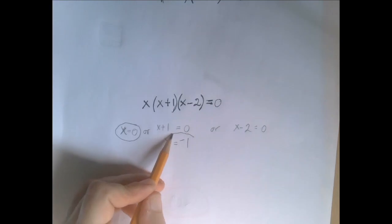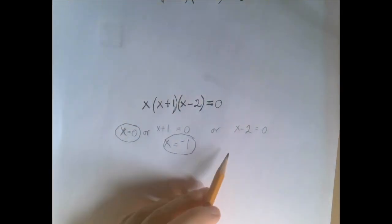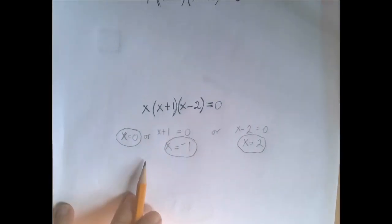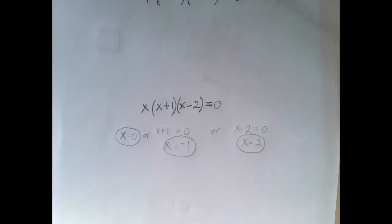then the second factor is zero. And solving the third linear equation, if x is 2, then the third factor is zero. So this equation has three solutions: zero, negative 1, and 2.